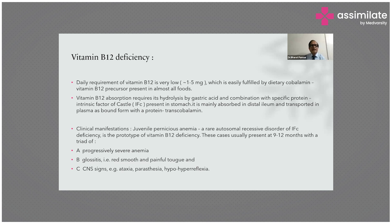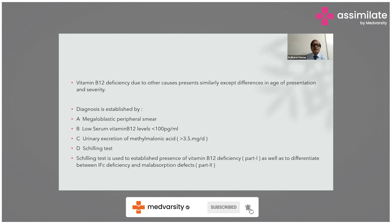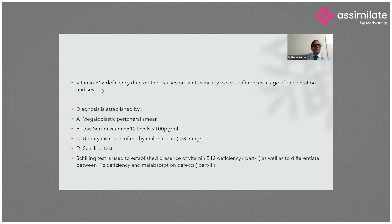The triad of pernicious anemia at 9 to 12 months is: anemia, red smooth tongue, ataxia, and hypo/hyperreflexia. Vitamin B12 deficiency due to other causes presents similarly, with differences in age of presentation and severity. Diagnosis is established by megaloblastic peripheral smear, low serum vitamin B12 (less than 100 pg/mL), and urinary excess of methylmalonic acid. The Schilling test is used to establish vitamin B12 deficiency and differentiate between intrinsic factor deficiency and malabsorption defect.